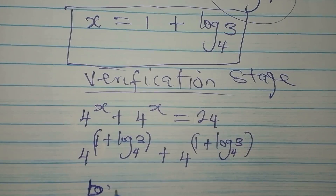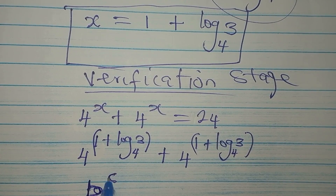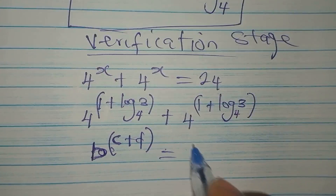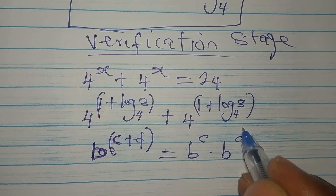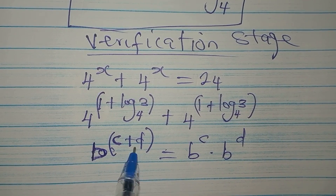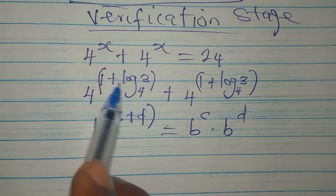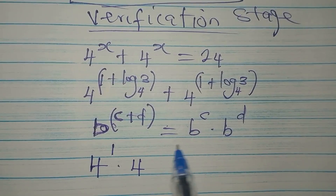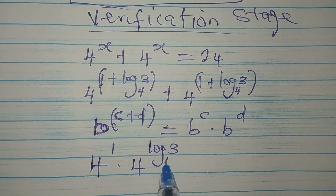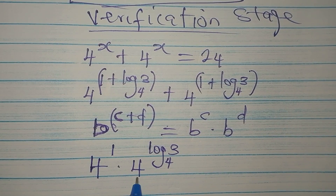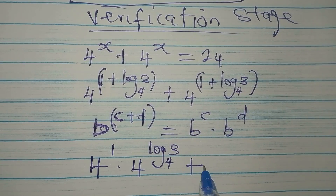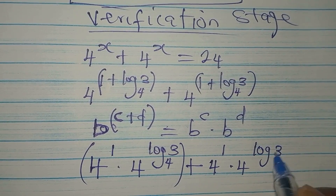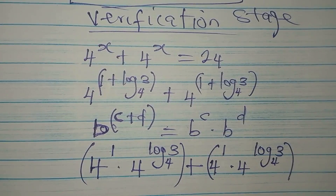We apply the law of indices: b to the power of (c plus d) equals b^c times b^d. So 4 to the power of (1 plus log₄3) becomes 4 to the power of 1 multiplied by 4 to the power of log₄3, and we have the same expression twice added together.